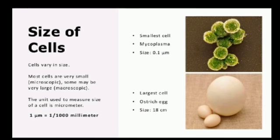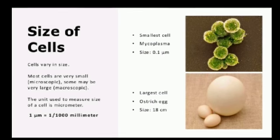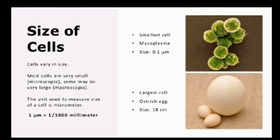The largest cell is that of an ostrich egg. The ostrich is a type of flightless bird, and the size of the ostrich egg is about 18 centimeters.